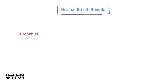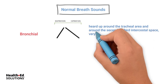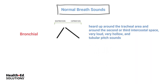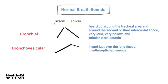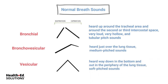Bronchial breath sounds are heard around the tracheal area and around the second or third intercostal space — they are very loud, hollow, tubular, high-pitched sounds. Bronchovesicular sounds are heard just over the lung tissue; they are medium-pitched, not too loud, not too soft. Vesicular breath sounds are heard out in the lung periphery, way down in the bottom of the lung tissue, and are very soft-pitched sounds.